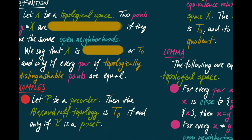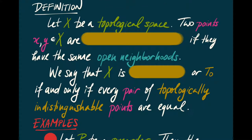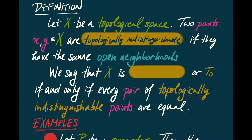To begin, we're going to describe two rather simple bedrock separation conditions. If X is a topological space, we'll say that two points x and y are topologically indistinguishable if and only if they have the same open neighborhoods — every open neighborhood of x is also an open neighborhood of y and vice versa. We then say that X is Kolmogorov, or T0, if and only if every pair of topologically indistinguishable points are equal.